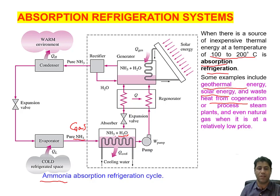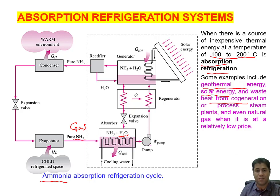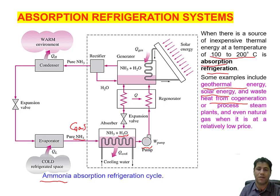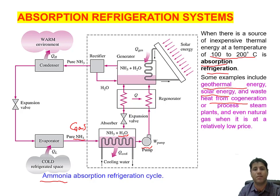After we introduce ammonia gas into the chamber containing water, we have an NH₃ plus H₂O mixture — a solution. This solution is then sent to a generator by a pump. The gas is dissolved in the liquid, and this liquid solution is pumped to the generator.